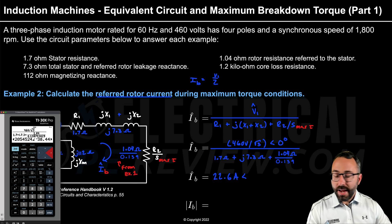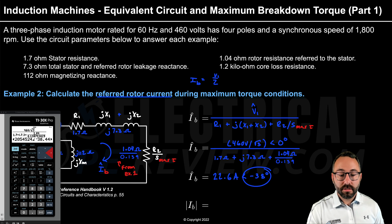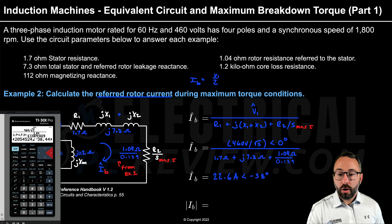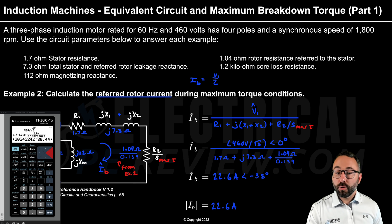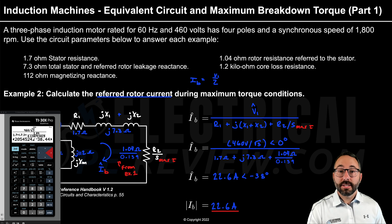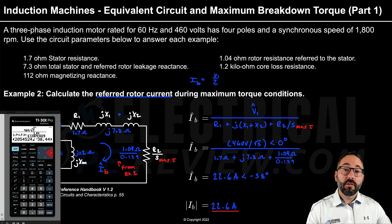Taking the magnitude of the breakdown current, the referred rotor current during maximum torque conditions is 22.6 amps. That is the final answer for Example 2, and that's it for Part 1 of this video.